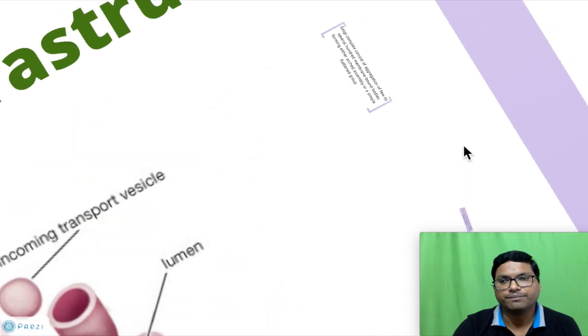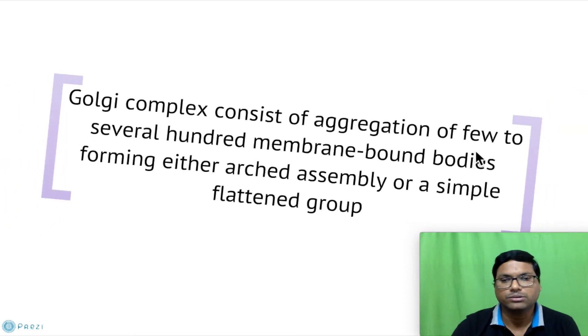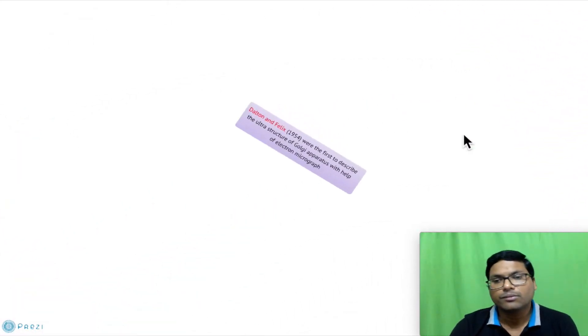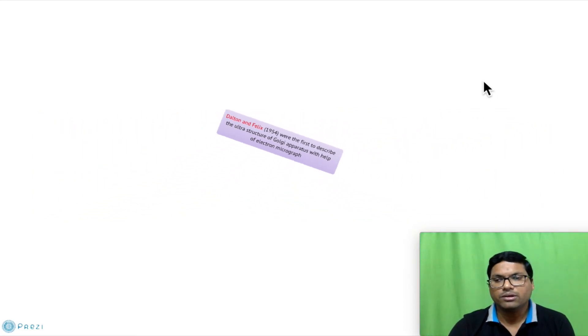Golgi complex consists of aggregation of few to several hundred membrane-bound bodies forming either arced assemblies or simple flattened groups. Dalton and Felix in 1954 were the first to describe the ultrastructure of Golgi apparatus with the help of electron micrographs.